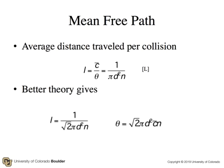So the average distance traveled per collision is going to be the average speed divided by theta, the collision frequency. And that is, we'll call L, and it's equal to 1 over pi d squared times the number density.